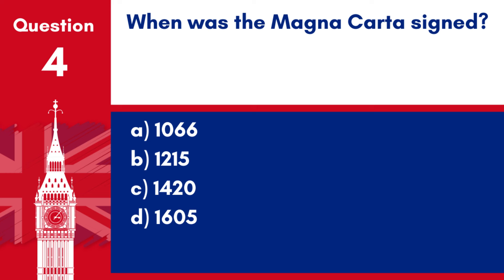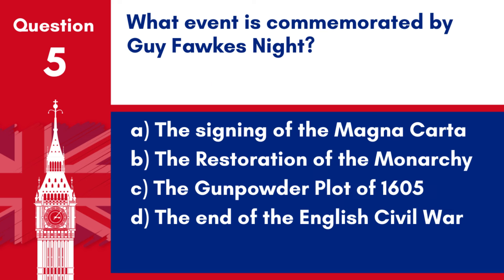Answer: b. 1215. The Magna Carta was signed by King John of England, establishing the principle that everyone, including the king, was subject to the law.